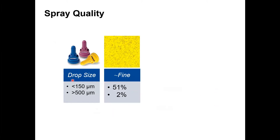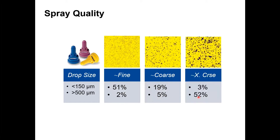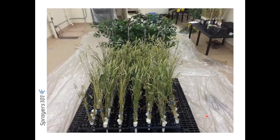Fine sprays have a lot of small droplets — good for coverage, but they may evaporate quickly and drift. Coarse sprays still have some small droplets but more droplets that live longer; relatively few are too large to miss or bounce off. Extremely coarse sprays have almost no driftables — good for herbicides — but the droplets may simply be too large and may not deliver the dose accurately.